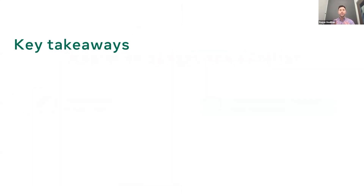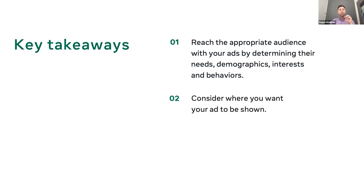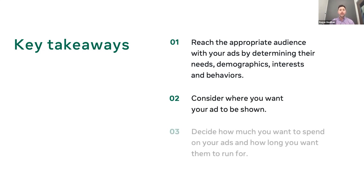So what are the three key takeaways from this part of the presentation? First, reach the appropriate audience by determining their needs, demographics, interests, and behaviors. Second, consider where you want your ad to be shown — you can use automatic placements to run ads across all Facebook apps and platforms. And thirdly, decide how much you want to spend on your ads and how long you want them to run for.